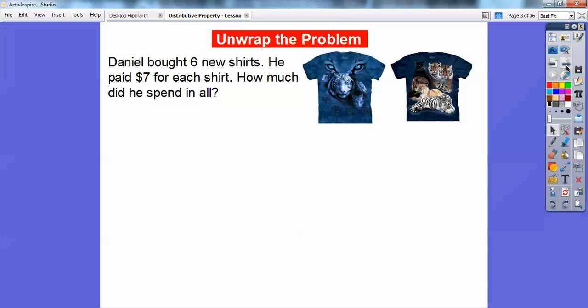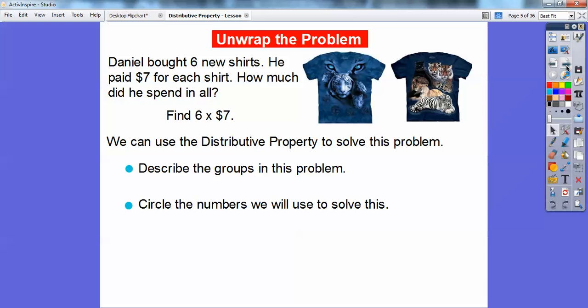Daniel bought six new shirts. He paid $7 for each shirt. How much did he spend in all? Here's two shirts, but he bought six of them. So we're going to find 6 times 7 and we're going to use the distributive property to solve this problem.